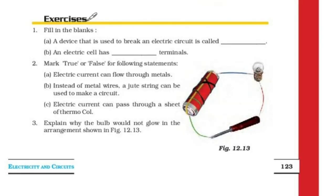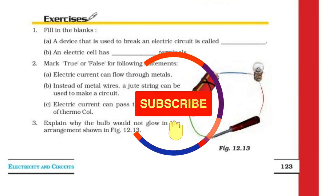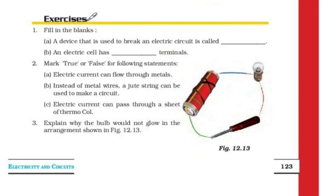Fill in the blanks: A device used to break an electric circuit is called a switch. An electric cell has two terminals — positive and negative. Mark true or false: Electric current can flow through metals — True. A jute string can be used instead of metal wires to make a circuit — False. Electric current can pass through a sheet of thermocol — False; thermocol is an insulator.